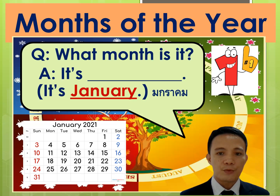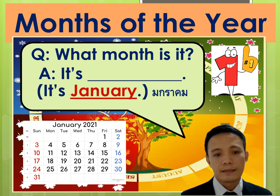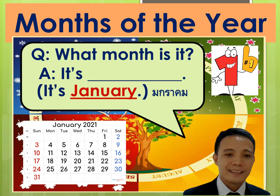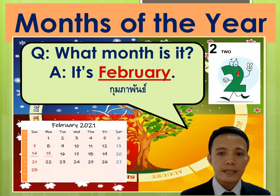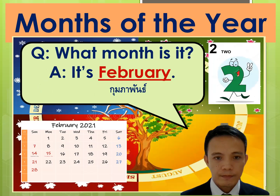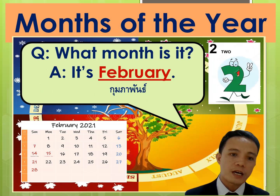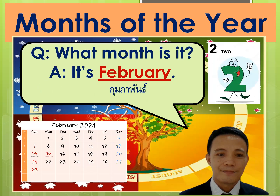You can also see here on the screen number one — January is the first month of the year. We also have the calendar for January here. What month is it? Number two — it's February. That's February. One more time: it's February.